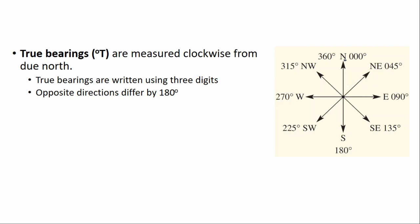The second point: opposite directions differ by 180 degrees. If you compare those two — if I do 225 minus 180 that gives me 45. If I did 315 minus 180 that gives me 135. So we can see that if they're directly opposite, they're going to differ by 180 degrees. That's the basics of how bearings work.